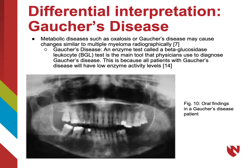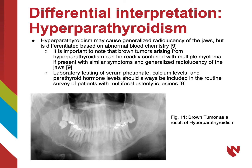Other metabolic diseases such as oxalosis or Gaucher's disease may present with radiographic changes similar to those seen in multiple myeloma. An enzyme test is used in the diagnosis of Gaucher's disease because all patients have low enzyme activity levels. Hyperparathyroidism may also present with generalized radiolucency of the jaw, but is differentiated based on abnormal blood chemistry. The resulting brown tumors from hyperparathyroidism may be confused with multiple myeloma, so laboratory testing of serum phosphate, calcium levels, and parathyroid hormones should always be included in the routine survey of patients with multifocal osteolytic lesions.